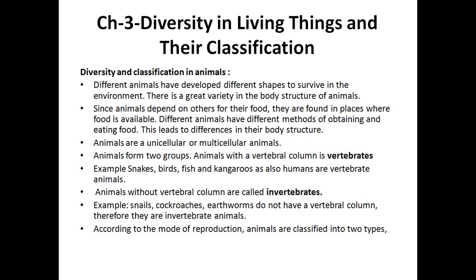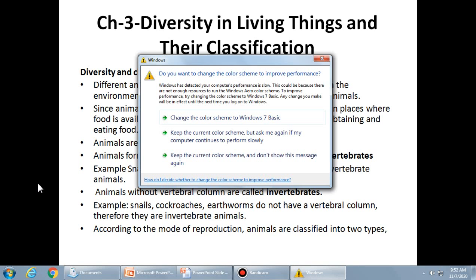Diversity and classification in animals. Here are some very important points. Different animals have developed different shapes to survive in the environment. There is a great variety in the body structure of animals. Since animals depend on others for their food, they are found in places where food is available. Different animals have different methods of obtaining and eating food, which leads to differences in their body structure and adaptations.